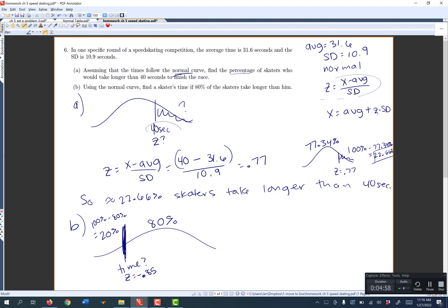So z equals negative 0.85. So now I know a z value, but I'm trying to get back to x, my actual time. So if I know z and I'm trying to get back to x, I want to use the second formula here.